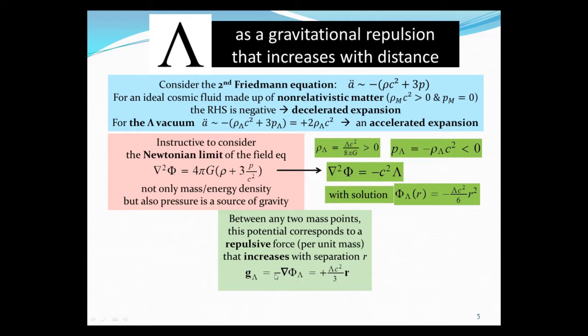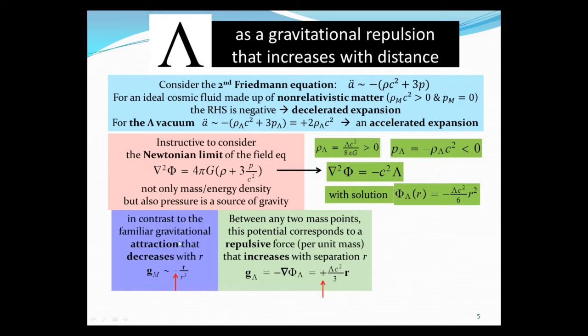This is to be compared with the familiar case—attraction that decreases with distance. This attraction has a minus sign here and goes as 1 over r squared, whereas here it's proportional to r and has a plus sign, so it's a repulsion that increases with separation.